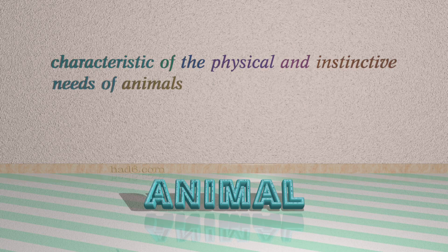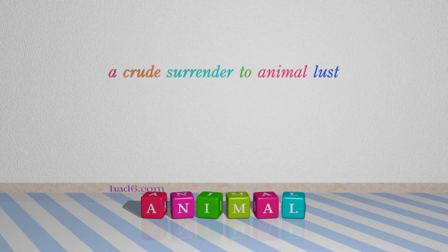Number 6: Animal. Which means characteristic of the physical and instinctive needs of animals. For example: A crude surrender to animal lust.